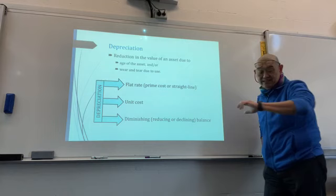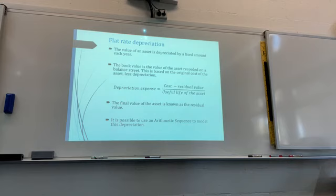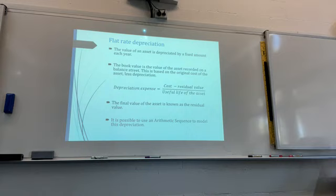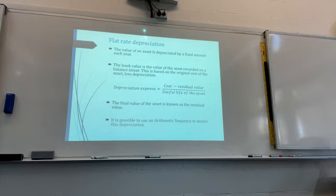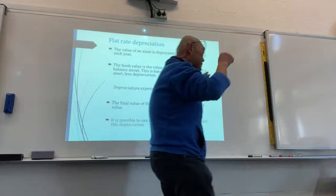Starting off with flat rate depreciation: the value of an asset is depreciated by a fixed amount each year. For example, if I buy something for $3,000 and depreciate it by $200 every year, after one year it will be $2,800, after the second year $2,600, and so forth. It is depreciated by a fixed amount — the word 'fixed amount' is important.